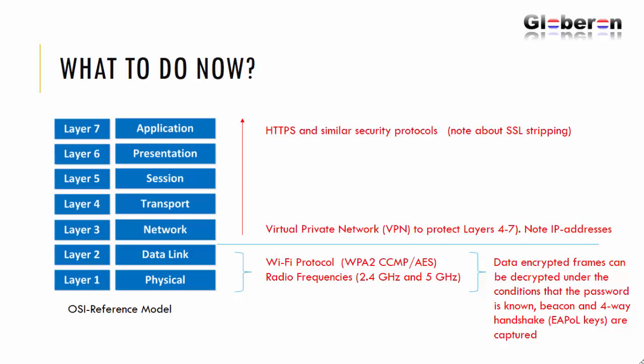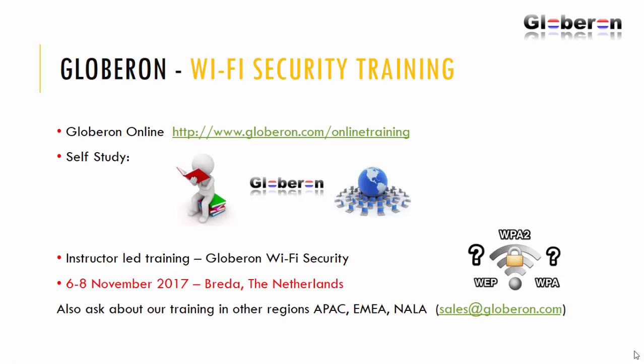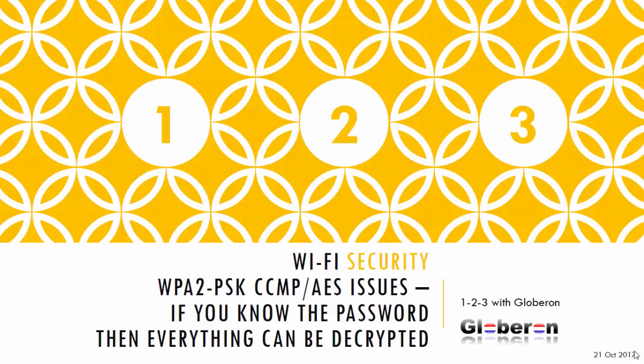Be careful in public Wi-Fi environments where WPA2 PSK pre-shared key is used with CCMP and AES — preferably use a VPN. Globeron does Wi-Fi security training available online at our website — you can do self-study or contact us for instructor-led classes running in November in Breda, Netherlands, and in other regions including Asia-Pacific, Europe, Middle East and Africa, North America, and Latin America. Contact us at sales.globeron.com. We hope this gave you a good overview of how easy it is to decrypt WPA2 CCMP AES encrypted traffic. Thank you.